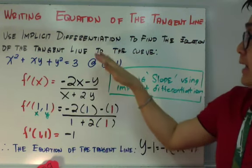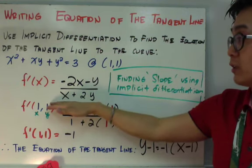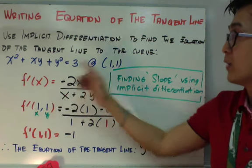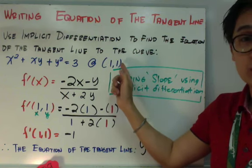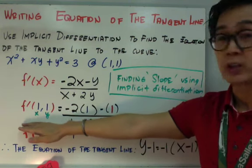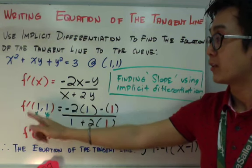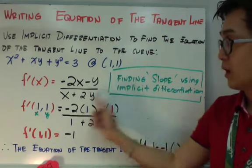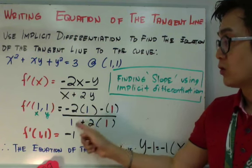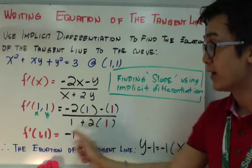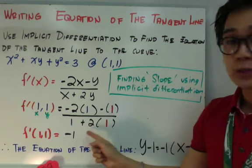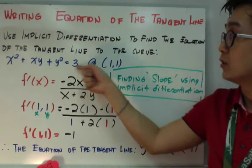Ang hinahanap daw natin e yung equation ng tangent line. So ito, slope pa lang yan, hindi pa ito yung equation ng tangent line. Ang gagawin natin is i-substitute natin yung value ng point natin which is (1, 1). So obviously 1 is your x, the other 1 is your y. Kung kukuha natin yung slope at point (1, 1), i-substitute lang natin yung mga values na 1 and 1. Mayroon tayong negative 2(1) minus 1, all over 1 plus 2(1). And to simplify it, yung f'(1, 1) will simply be negative 1. So ito yung slope natin using implicit differentiation.